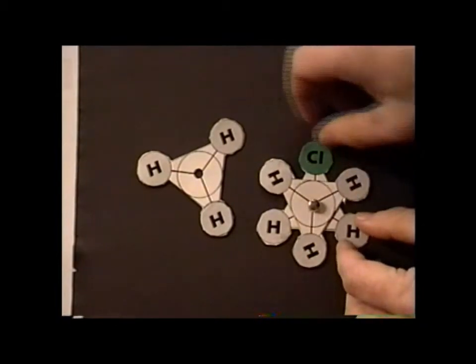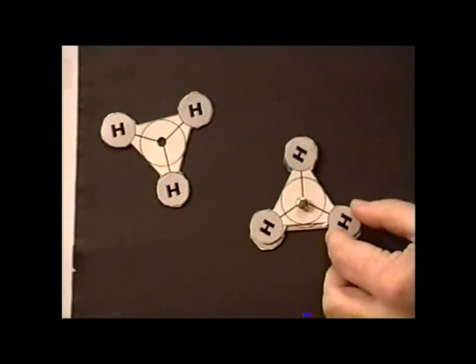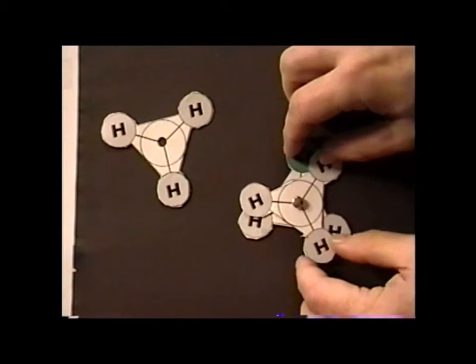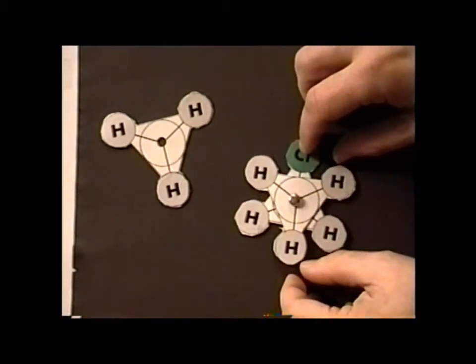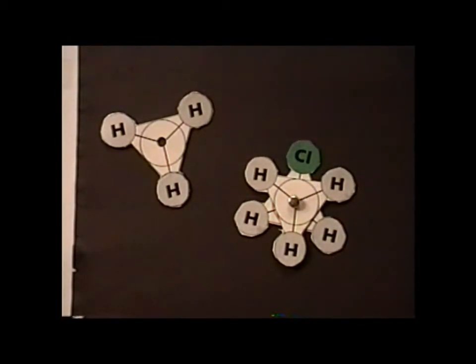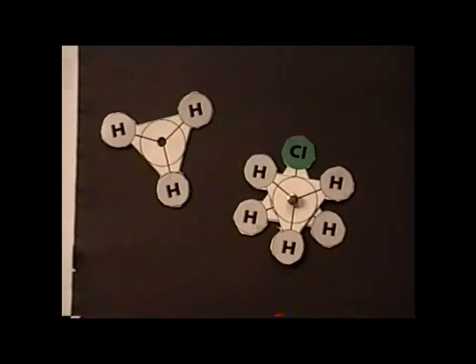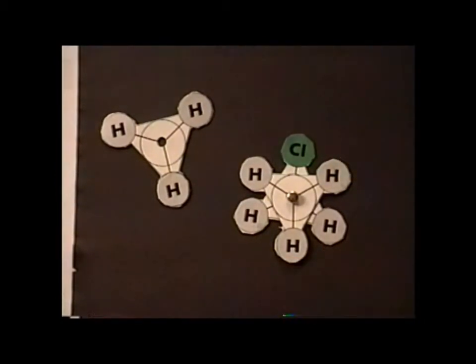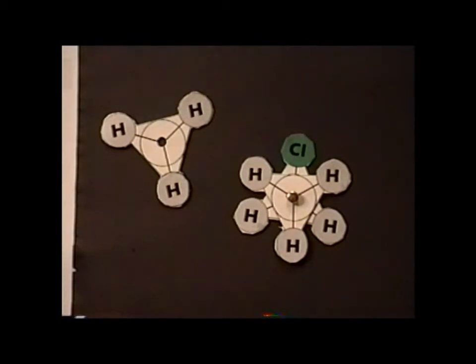And again, we can work through the different possible conformations, starting with the eclipsed conformation, which will be the high energy conformation. And as we rotate around, first we have the various skew conformations, and then we have the staggered conformation. So, the ability to disassemble and reassemble with different substituent patterns allows these models to be used to demonstrate Newman projections not only for the simplest case of ethane, but for even extremely complicated substituent patterns.